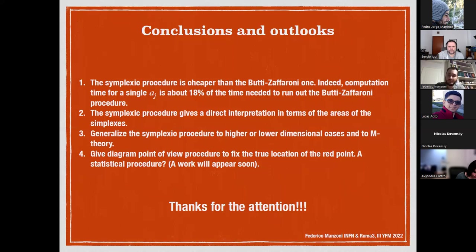This procedure gives a direct interpretation of the quantity in terms of the areas that you can use to decompose the toric diagram. However, there are also open doors about this: we can try to generalize this procedure to higher or lower dimensional cases and also to M-theoretic constructions instead of string theory. With the Butti-Zaffaroni procedure, this seems not to be so easy. We will give a diagrammatic procedure to fix the true location of the red point, and we are now working on this. Probably there is a systematic procedure to fix the true location of the red point. Thanks for your attention, that's all.